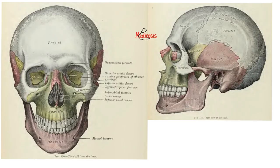I promised to tell you the names of all the skull bones. First, the unpaired skull bones — bones you have only one of. The mandible, the frontal bone, the ethmoid bone, the sphenoid bone, the occipital bone, and the vomer.